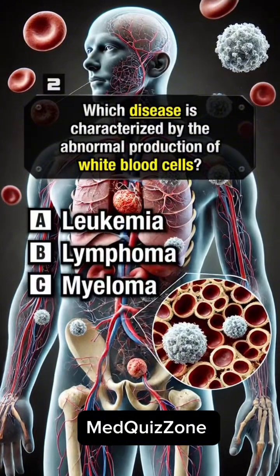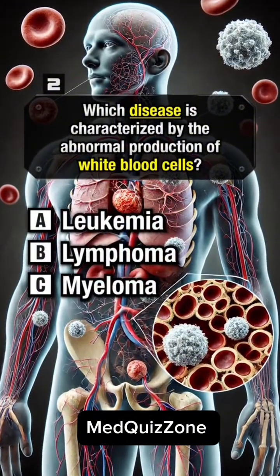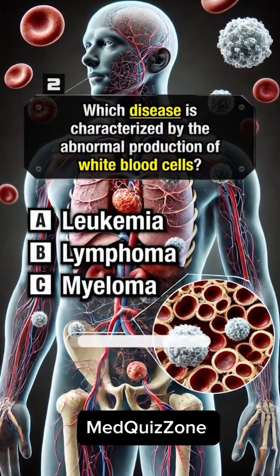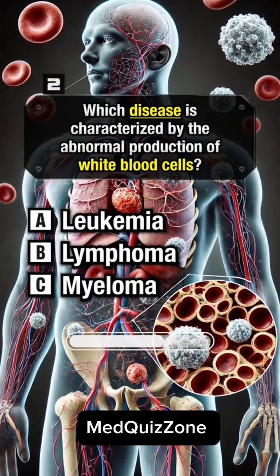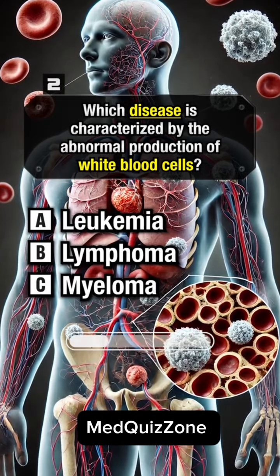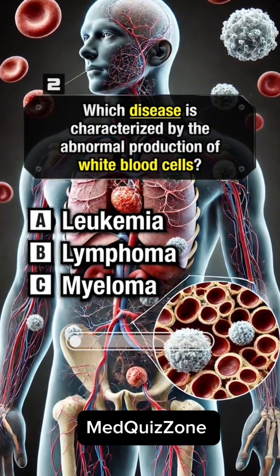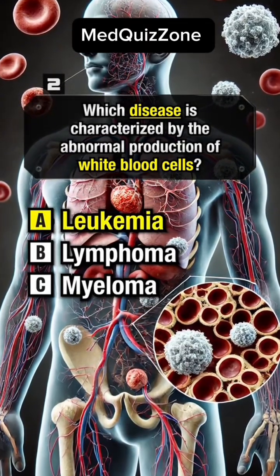Which disease is characterized by the abnormal production of white blood cells? Answer A, leukemia.